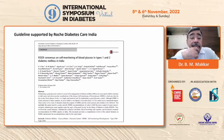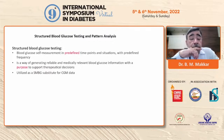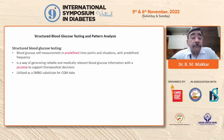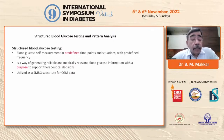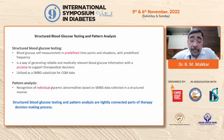We published the first self-monitoring guidelines in India under the auspices of RSSDI in 2018, which recommended structured blood glucose testing as the way to monitor glucose. The guidelines state that blood glucose self-measurement at predefined times — structured SMBG — is the way to generate reliable and medically relevant blood glucose information to support therapeutic decisions. Multiple-point SMBG may be used as a substitute for CGM data in resource-constrained settings, and recognizing individual glycemic abnormalities through structured SMBG data enables pattern analysis.